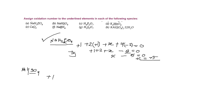We know sodium gives plus one. There is one hydrogen which gives plus one. For sulfur, we consider x. Then there are four oxygens, and each oxygen has an oxidation state of minus two. Since there is no charge on the species, we set the whole expression equal to zero. If the species had a plus one, minus one, plus two, or minus two charge, we would set it equal to that charge.